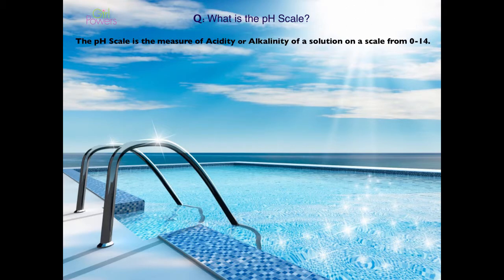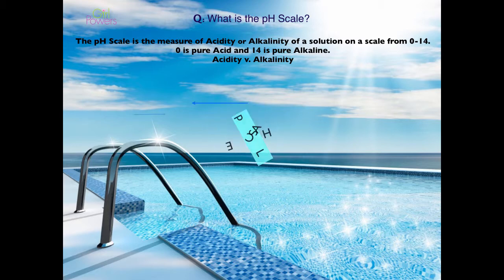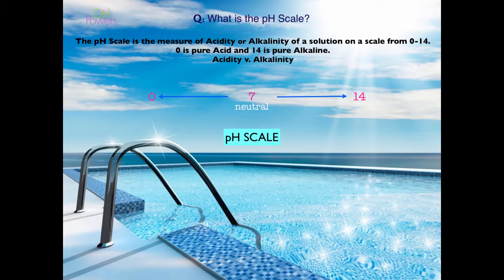So what is the pH scale? It's a measure of acidity or alkalinity of a solution on a scale from 0 to 14. Zero is pure acid, which will burn a hole in anything, and 14 is pure alkaline — the complete opposite, very gentle and mild. The pH scale has 7 in the middle as neutral; 0 to 7 is the acid side, and 7 to 14 is the alkaline, or basic, side.